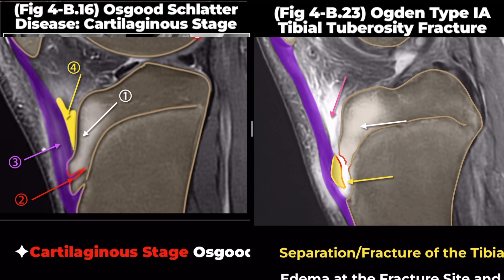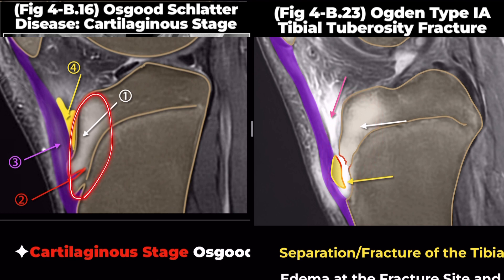These two cases can share some common features, such as marrow edema at the proximal tibia, changes in the secondary ossification center, and Hoffa's fat pad edema.